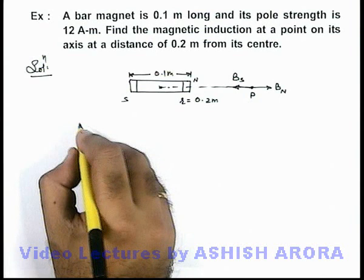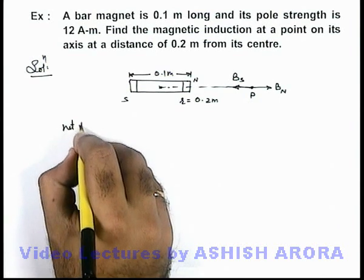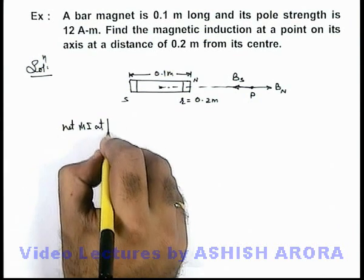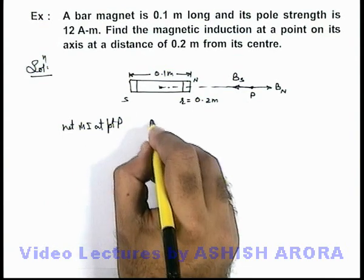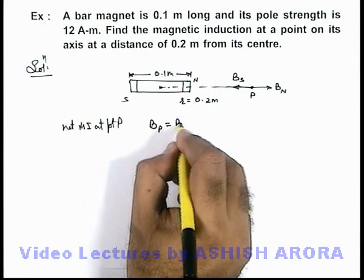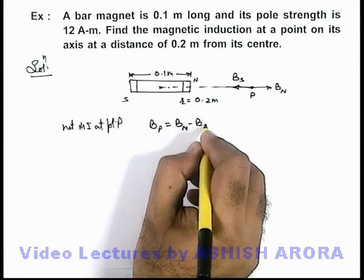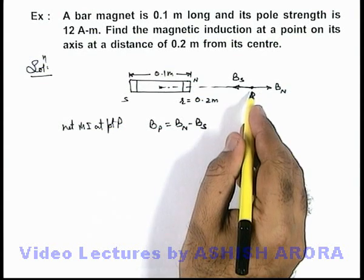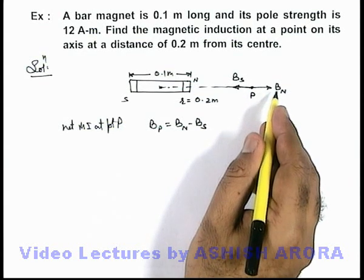So here we can write that net magnetic induction at point P can be given as Bp equals Bn minus Bs, because north pole is closer to point P so the magnetic induction will be more.